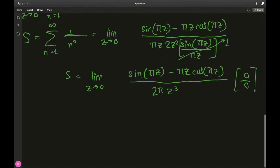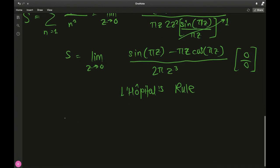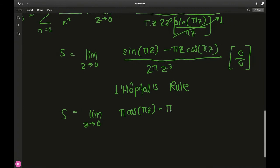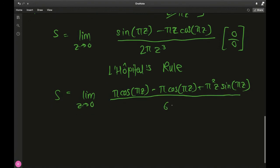With dignity giving us limit as z goes to 0 of π times cosine of πz minus π times cosine of πz. I am using the product rule, I differentiated with z, now we are differentiating the cosine, so we have π squared z sine of πz.